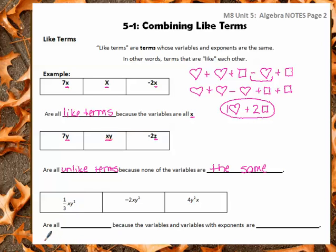If we look at the next example, we have XY squared, XY squared, Y squared, and X. Each one of them has an X, and each one of them has a Y squared, even though it's not in the same order. So therefore, they are all like terms.